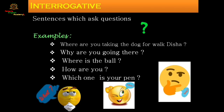'Why are you going there?' 'Where is the ball?' — someone is asking where the ball is. 'How are you? Is everything fine?' — these are questions we often ask. 'Which one is your pen?' — asking which pen belongs to you. All these sentences where we are asking questions are interrogative sentences.